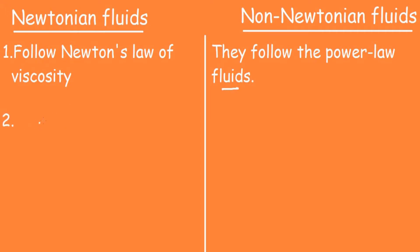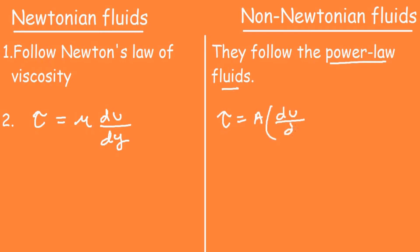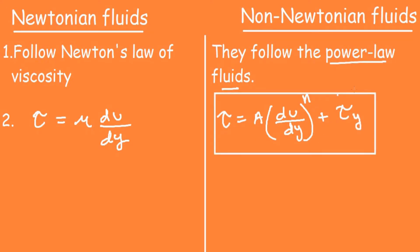For Newtonian fluids, the shear stress tau equals mu times du/dy — that is, the shear stress is linearly changing with the velocity gradient. But for non-Newtonian fluids, they follow the power law fluid which states that tau equals some constant 'a' times (du/dy) to the power n, where n is the flow behavior index, plus some constant tau_y. This is known as the power law of fluid, and the former is Newton's law of viscosity.